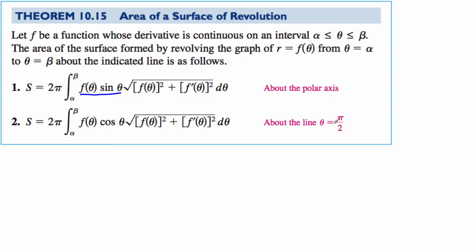Now if I want to rotate about the line θ = π/2, then it's f(θ) cos(θ) times the square root of [f(θ)]² plus [f'(θ)]² dθ, all multiplied by 2π.